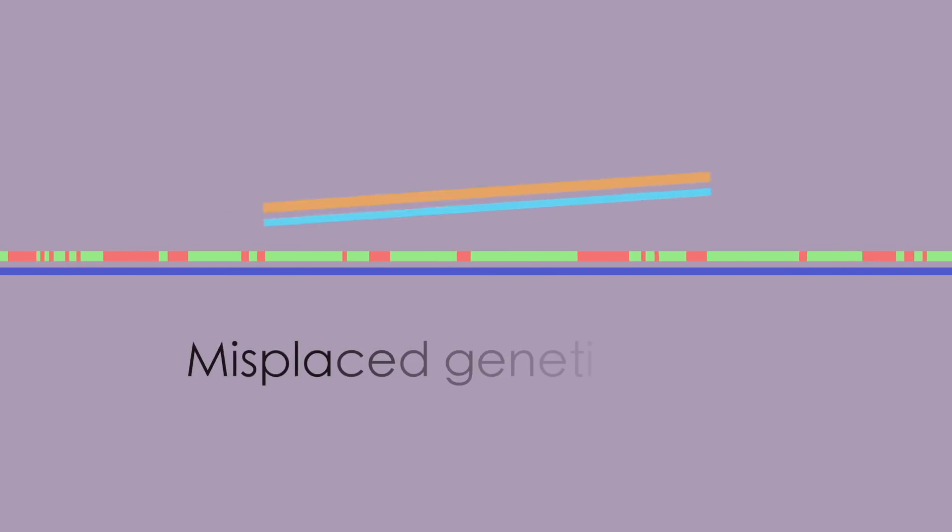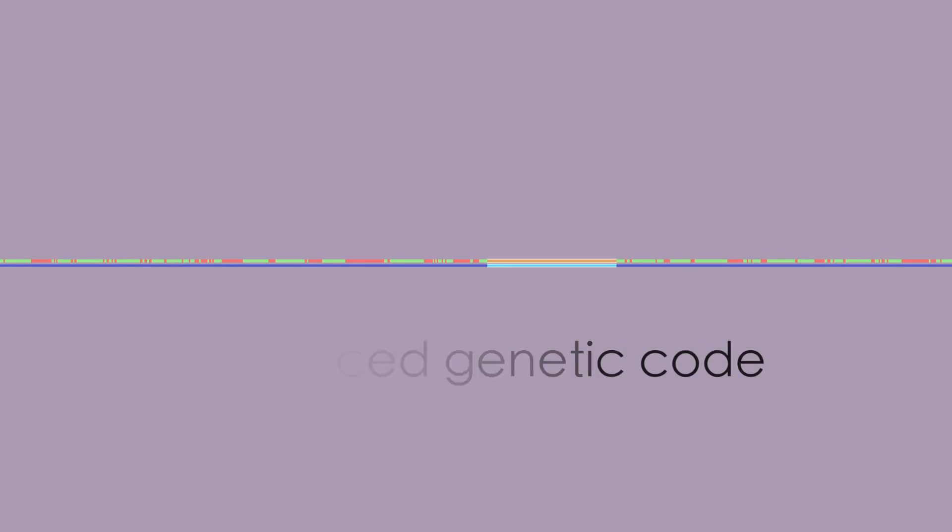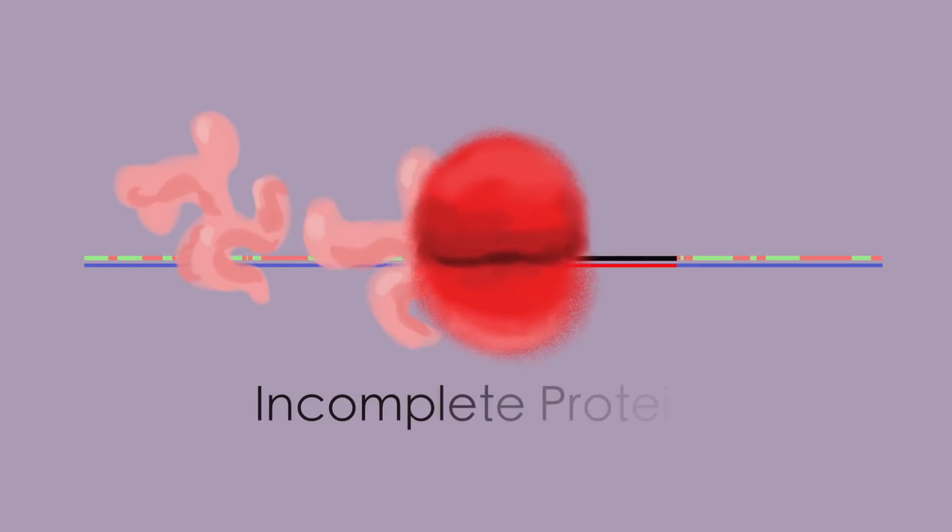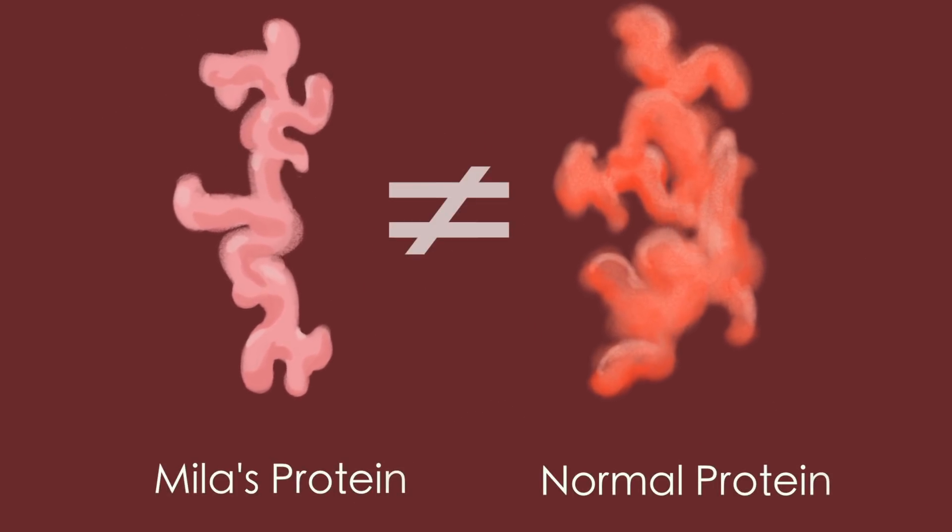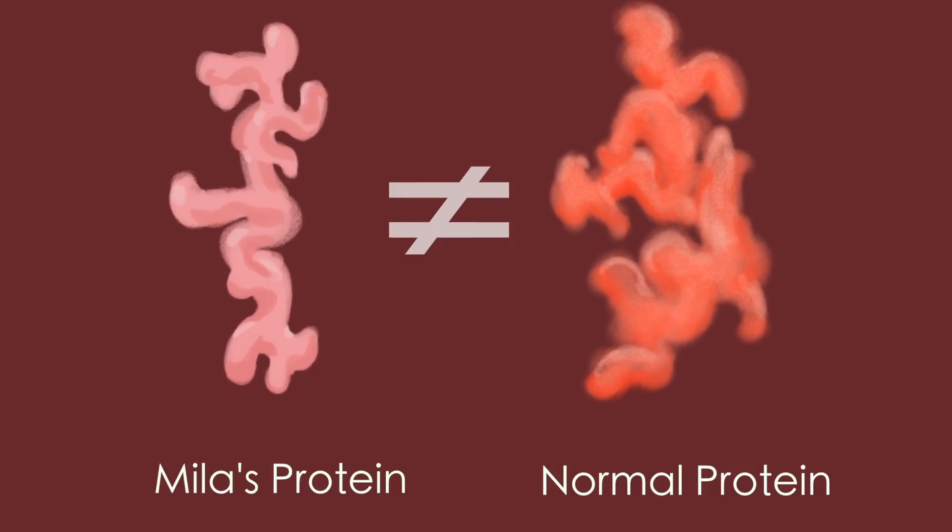But in Mila's RNA, a misplaced piece of genetic code has thrown off the splicing process. So when the cell's machinery comes to assemble the protein, it's halted by the misplaced code, and the produced protein is defective. Thus, Mila's lysosomes can't function properly.